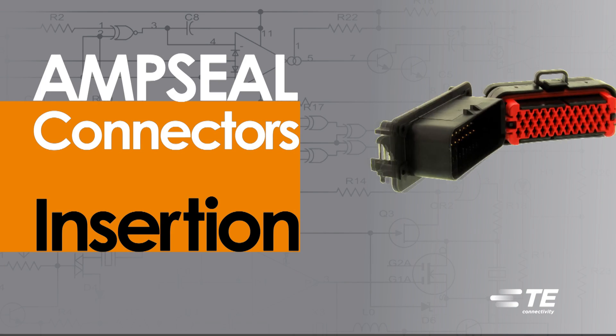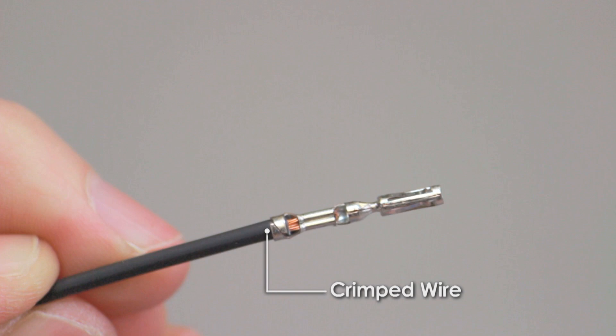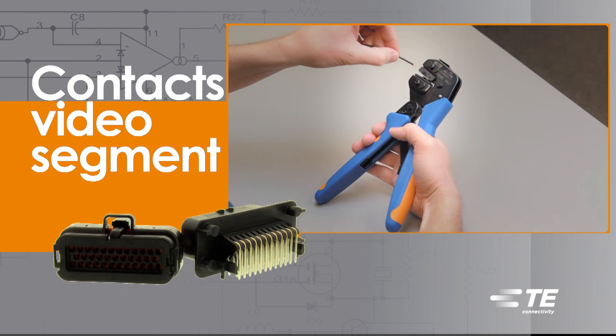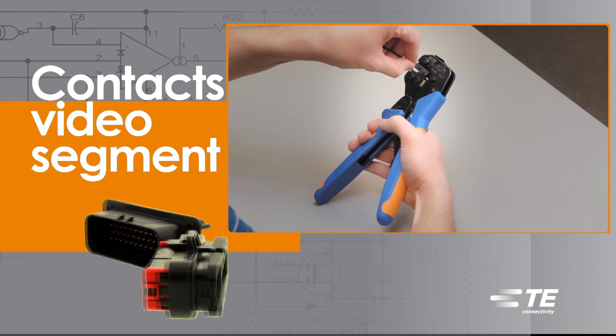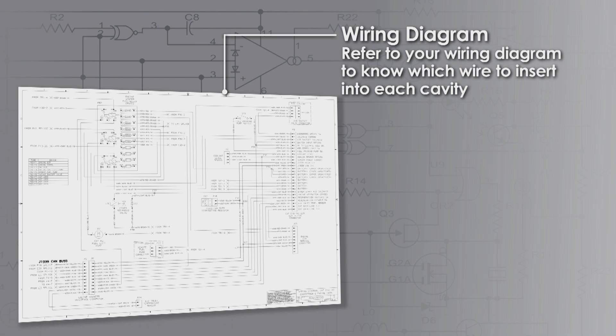AmpSeal Contact Insertion. Begin with a crimped wire. For assistance, refer to the AmpSeal Contacts video segment for detailed instructions. Refer to your wiring diagram to know which wire to insert into each cavity.